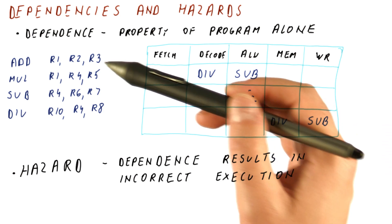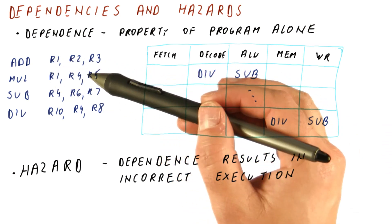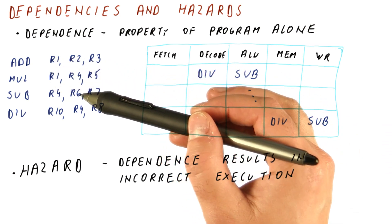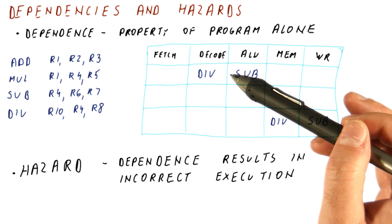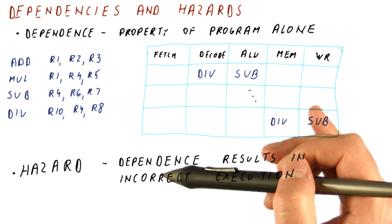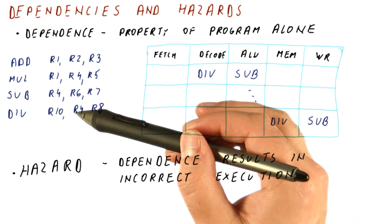So for example, we have seen that output and anti-dependencies in this particular pipeline cannot become hazards, but true dependencies can.